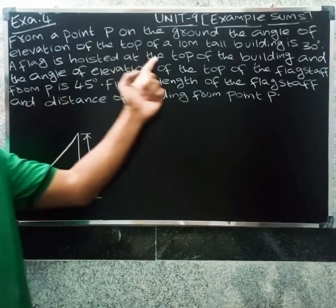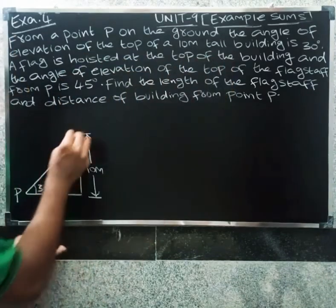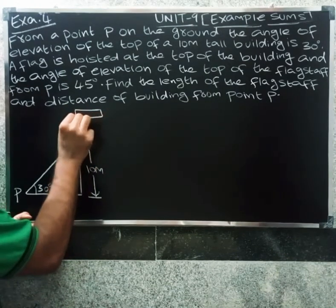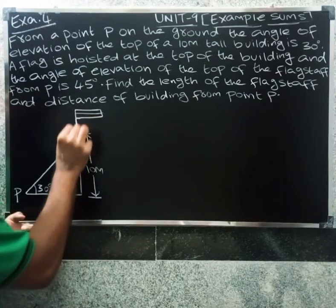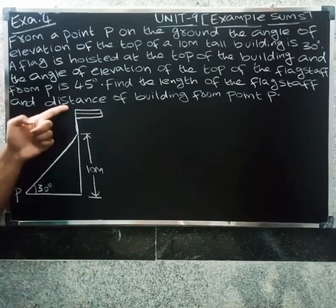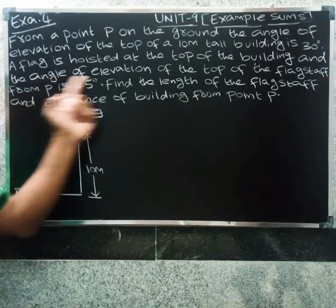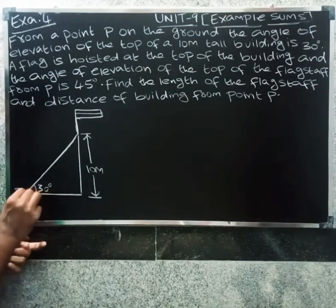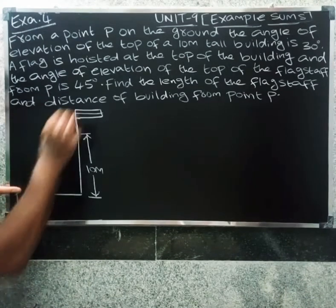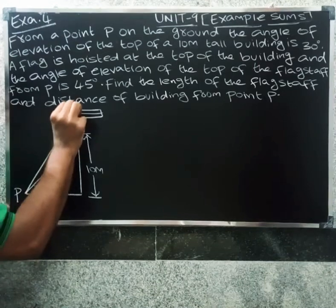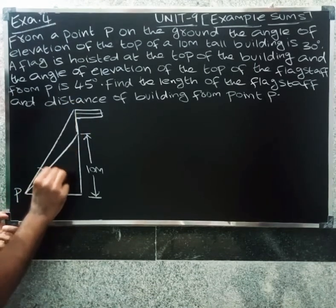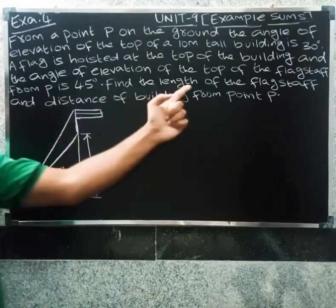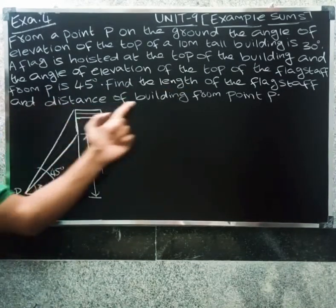Next, a flag is posted at the top of the building. And the angle of elevation of the top of the flagstaff from point P is 45 degrees. We need to find the length of the flagstaff and the distance of the building from point P.